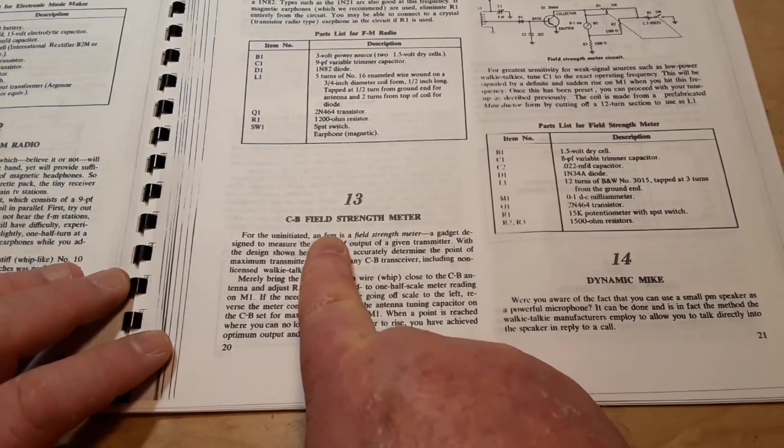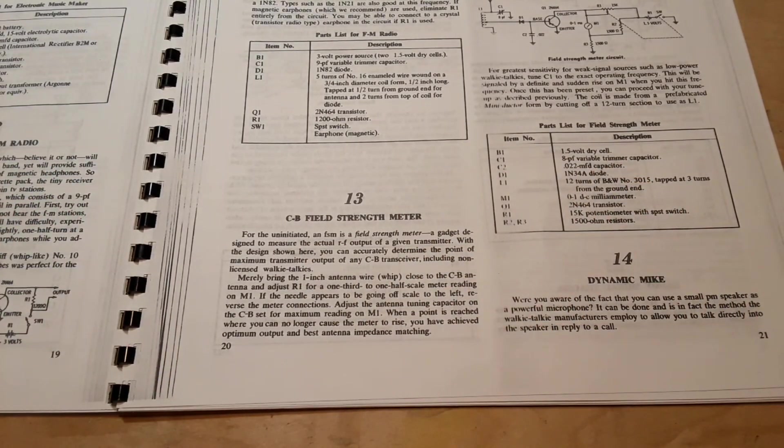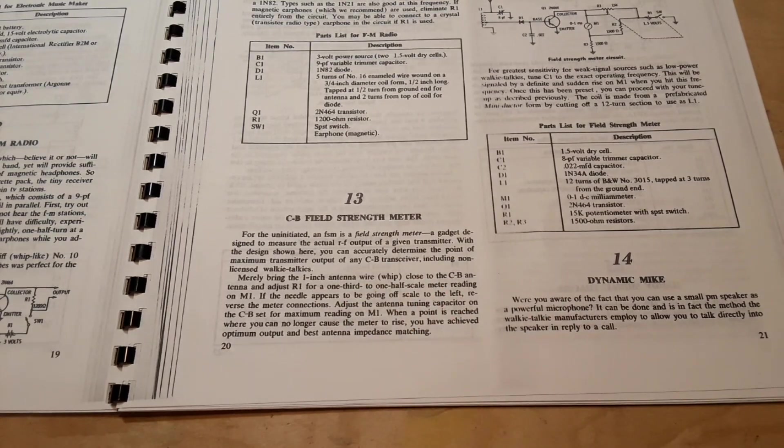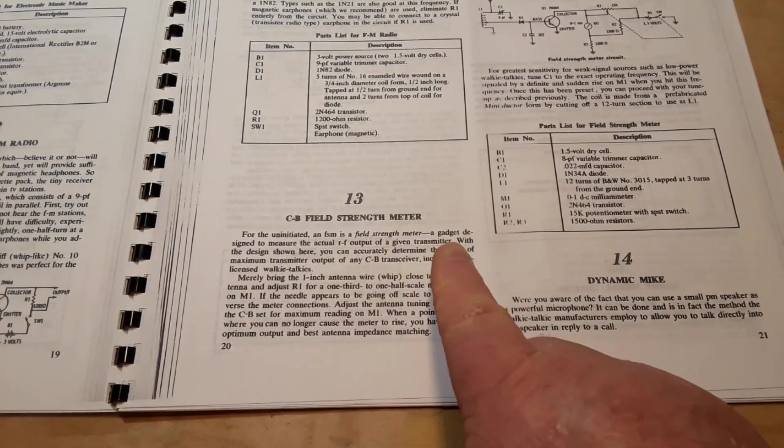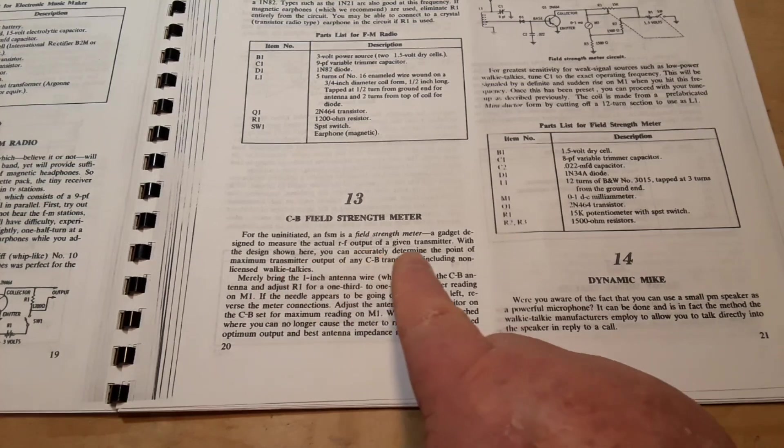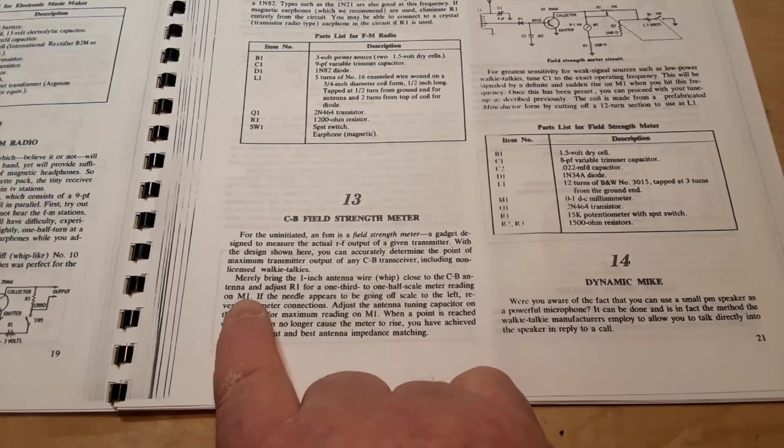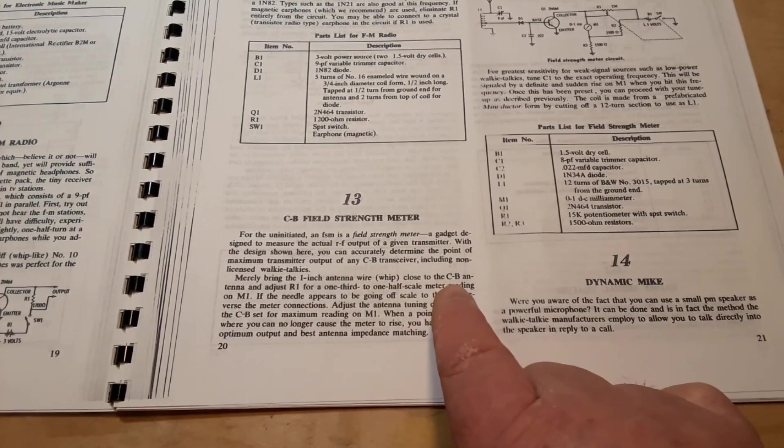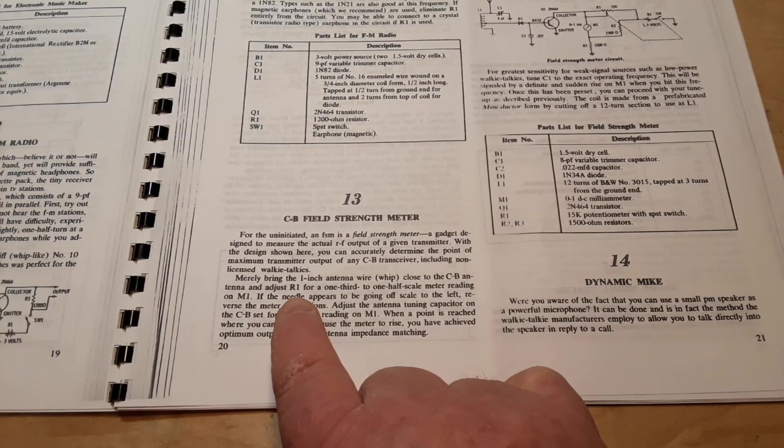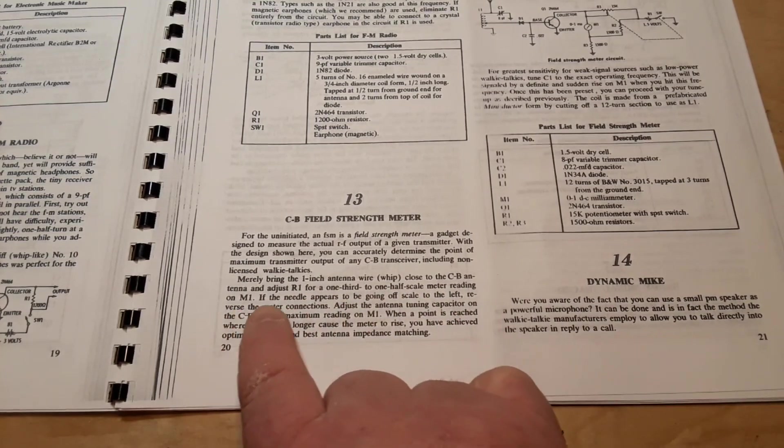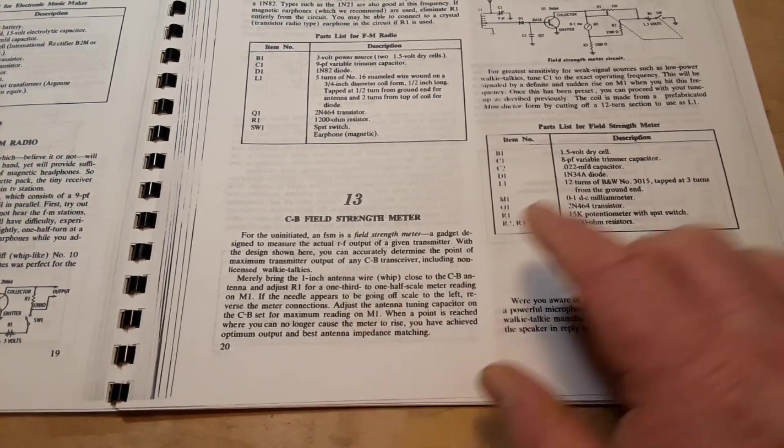CB Field Strength Meter. Back then, of course, the CB Radio, Citizens Band Radio, was really big. In fact, my cousin Mark met his first wife over the CB Radio back in the 70s. And she only tried to kill them twice. Field Strength Meter for a CB Radio. Measure the RF output of a given transmitter.